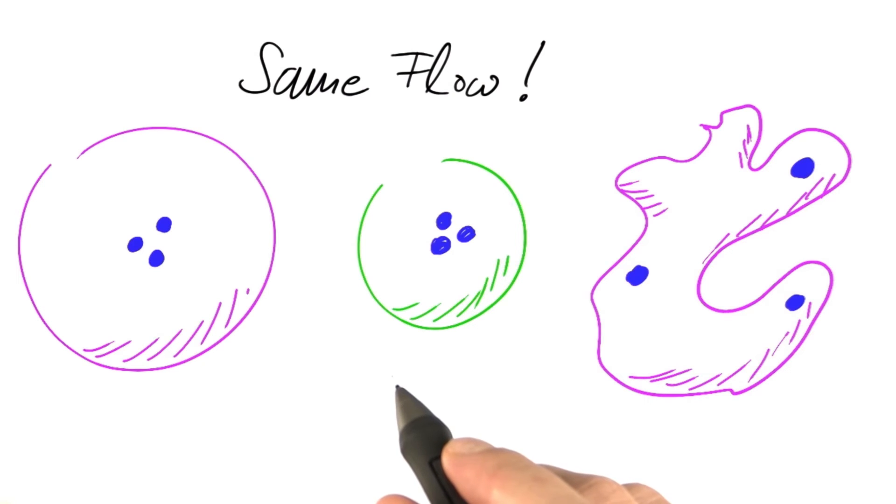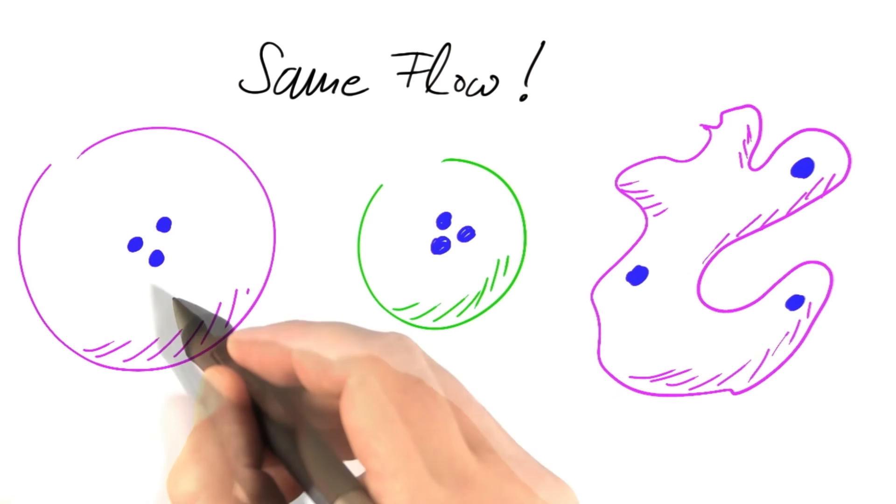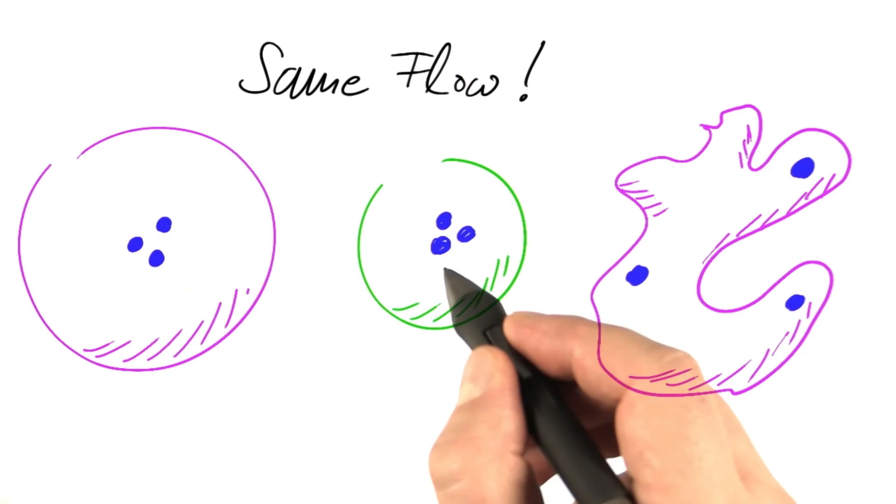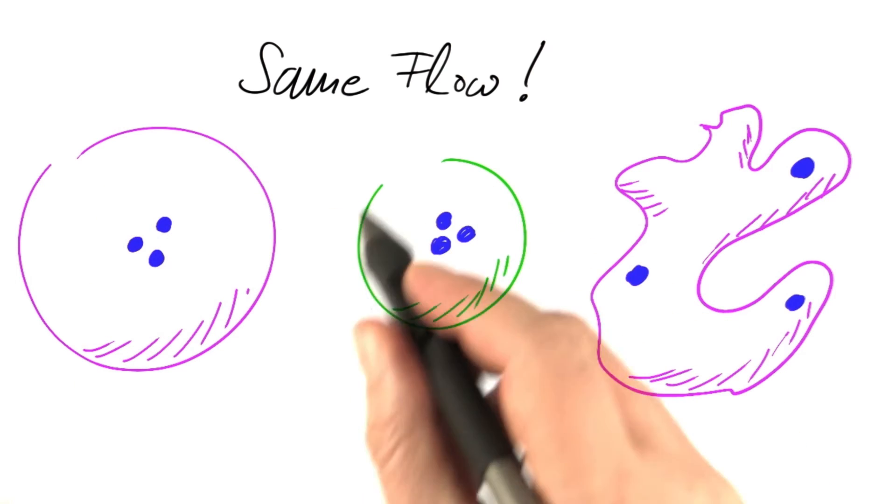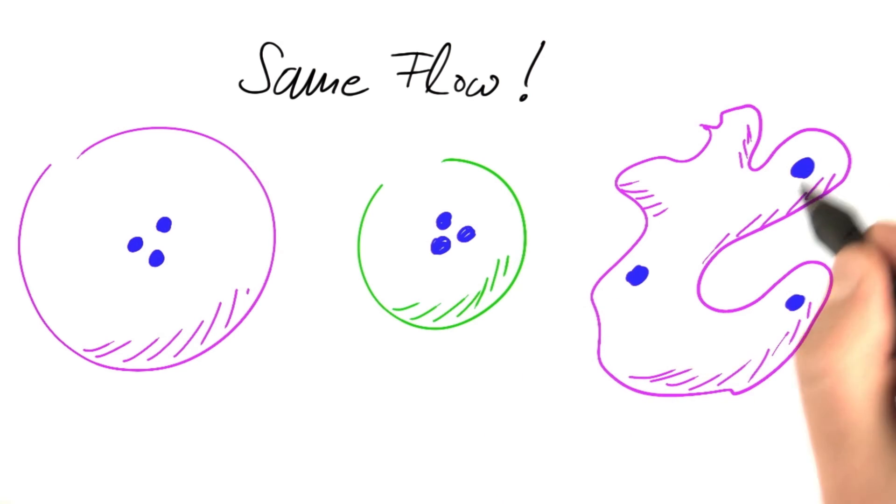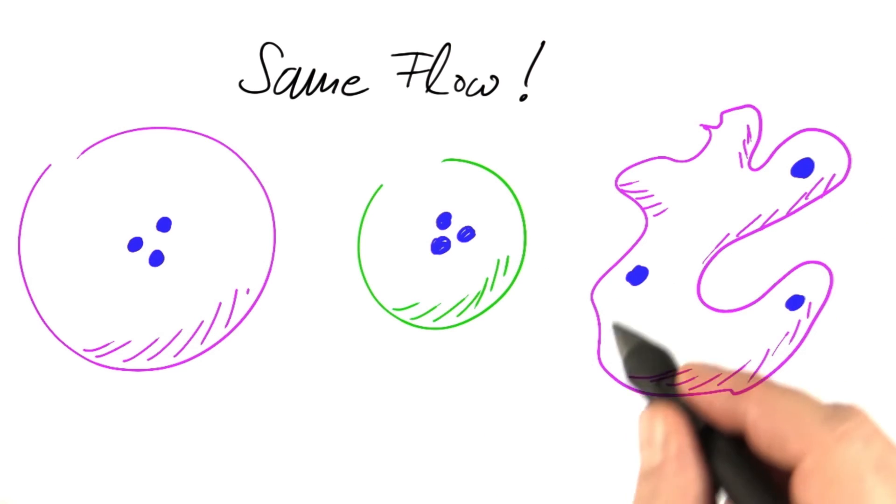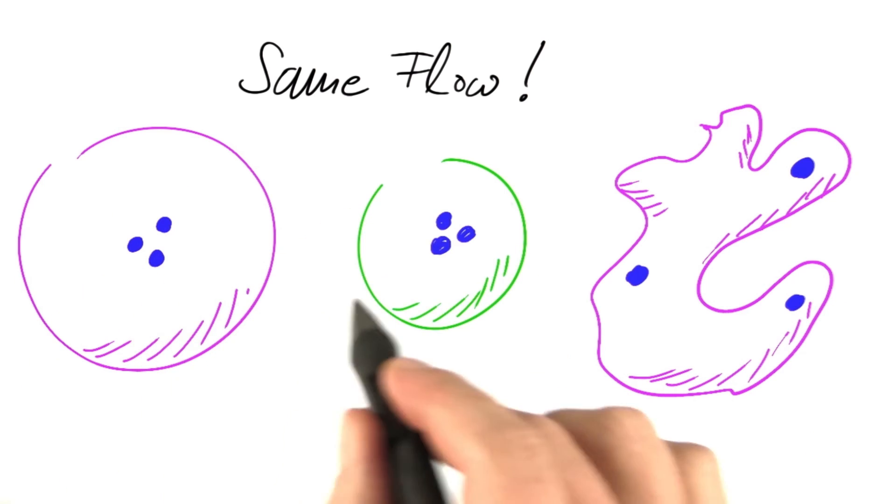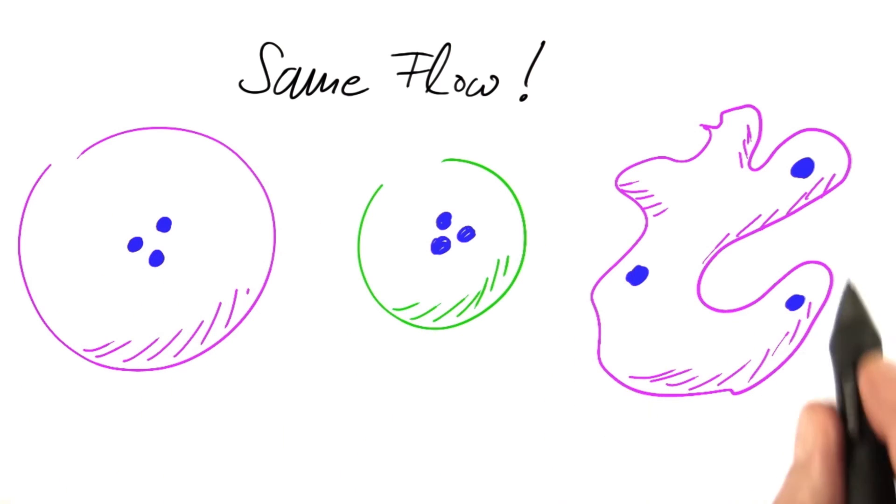Once this analogy between gravity and water is in place, it's easy to see that the flow through each of these surfaces has to be the same. Let's assume we have three masses at the center of this sphere, the same masses at the center of that smaller sphere, and the same three masses somewhere inside this weird closed surface. Then the flow through each of these surfaces has to be the same.